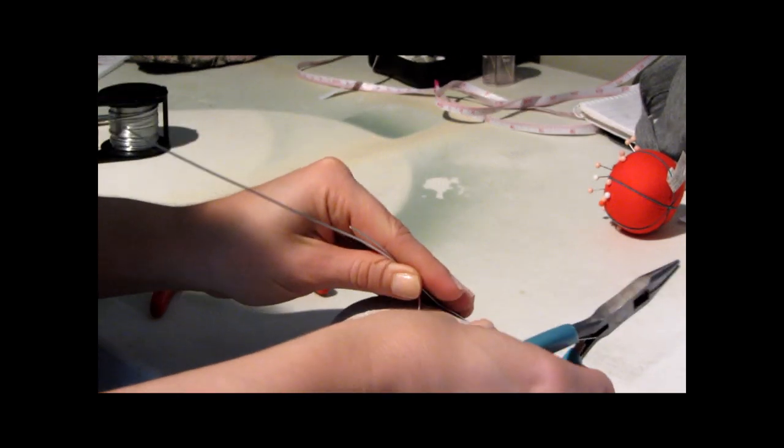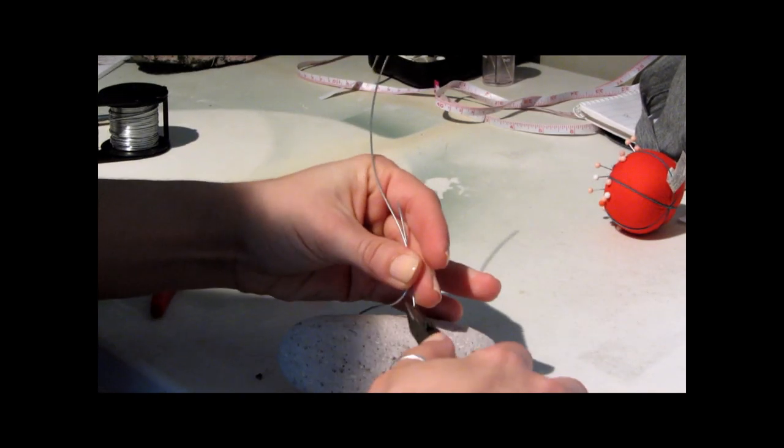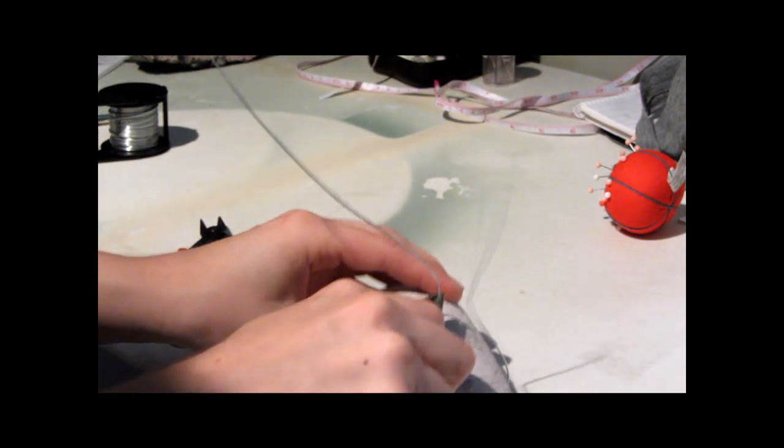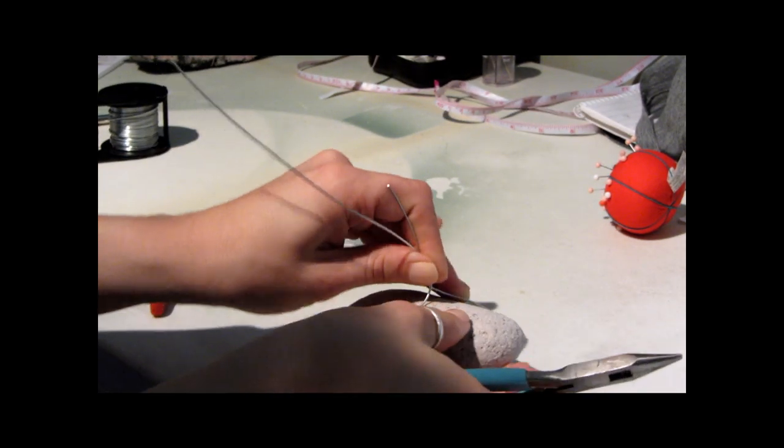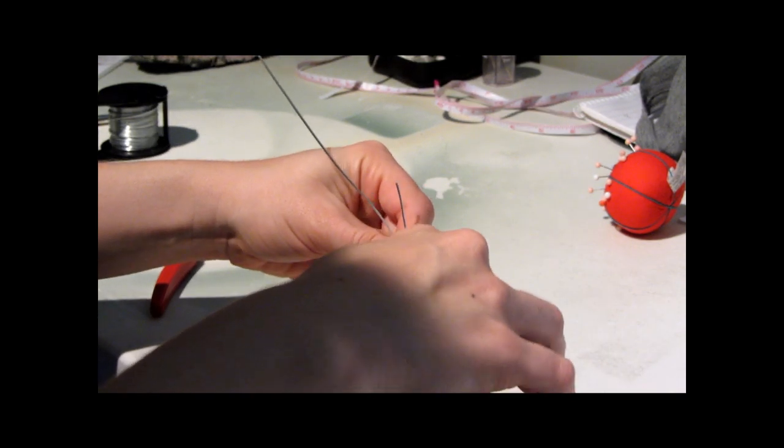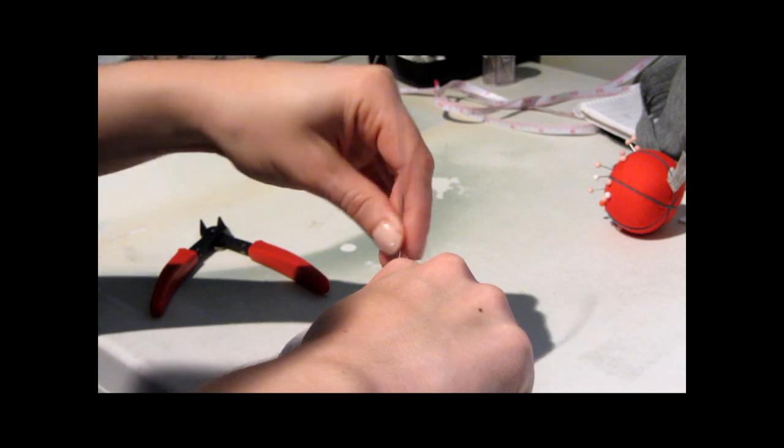So this is super simple. You take about where the two wires are meeting. You pinch it with the pliers. Make sure you get both. And this wire is kind of stiff, so it may give you a little bit of a hard time, but you'll get it.